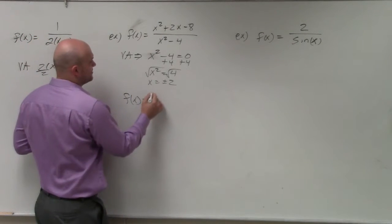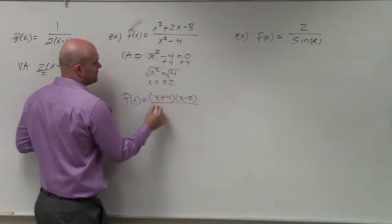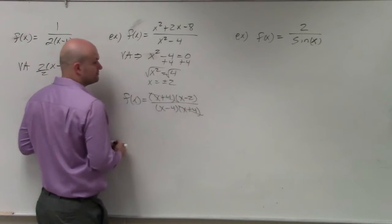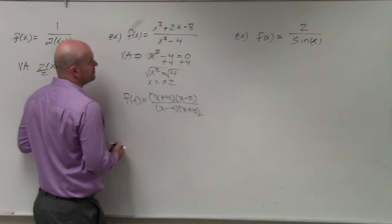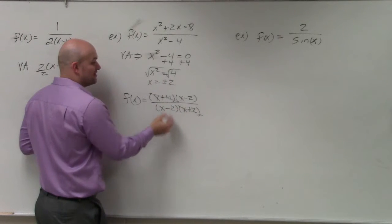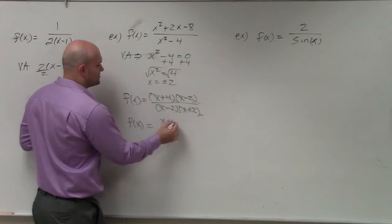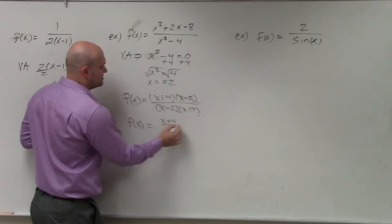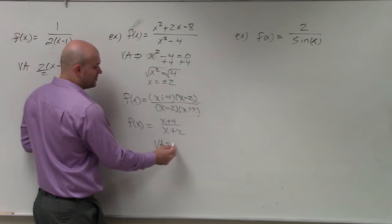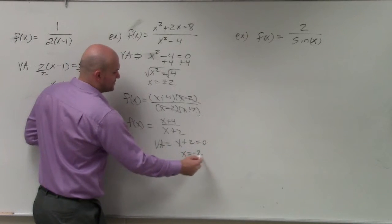So when I factor this out, I get x plus four times x minus two in the numerator. And x squared minus four factors as x minus two times x plus two in the denominator. Those cancel out, so we're left with x plus four divided by x plus two. So in reality, the only non-removable discontinuity — our real vertical asymptote — is x plus two equals zero, meaning x equals negative two.